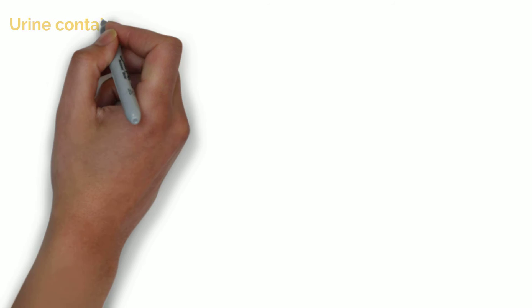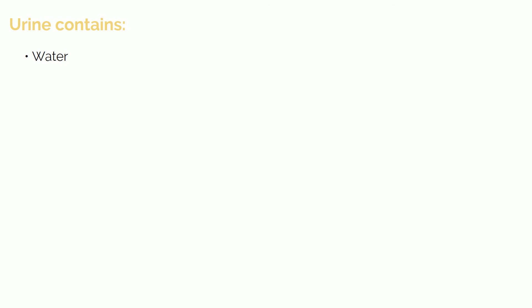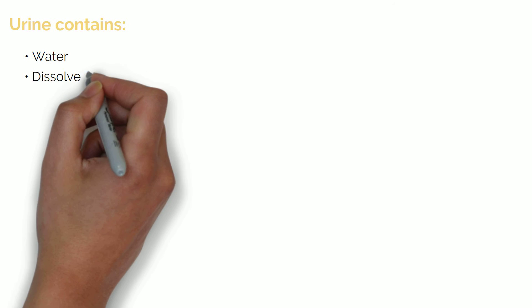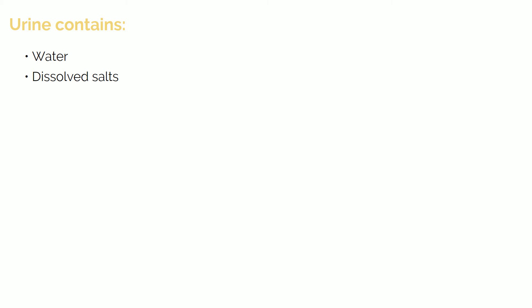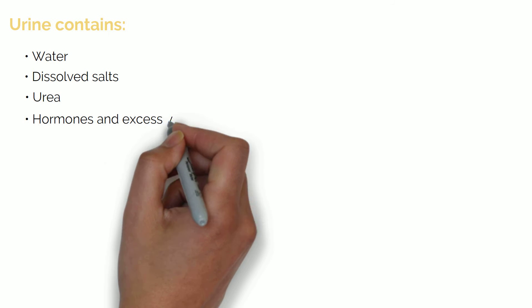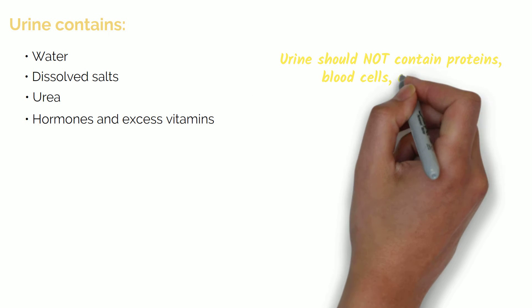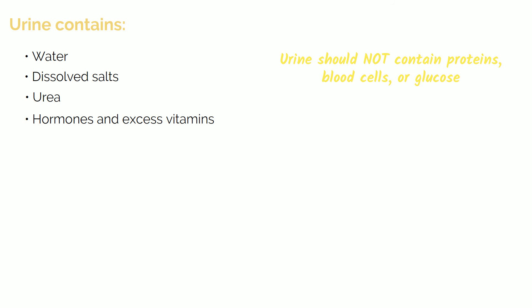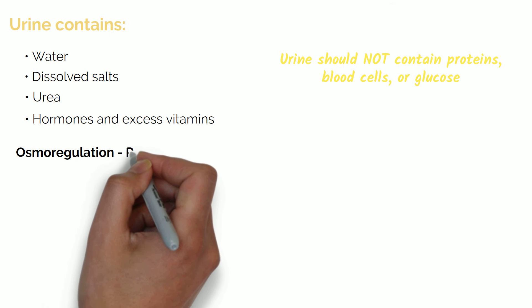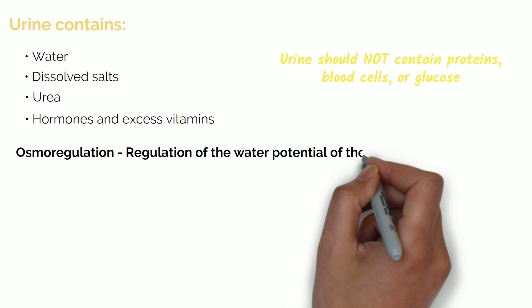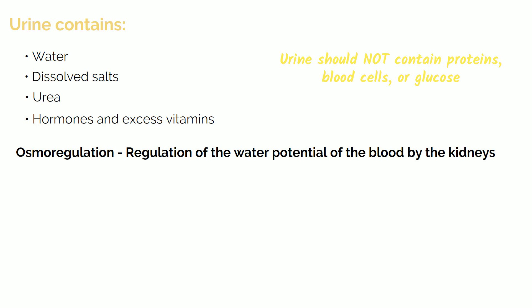The filtrate remaining leaves via the ureter into the bladder as urine. Urine contains water, dissolved salts, urea, hormones and excess vitamins, but should not contain proteins, blood cells or glucose. Water is essential for cell and body function, therefore it is important to keep water levels constant. The kidneys are crucial for regulating the water potential of the blood, and this is known as osmoregulation.